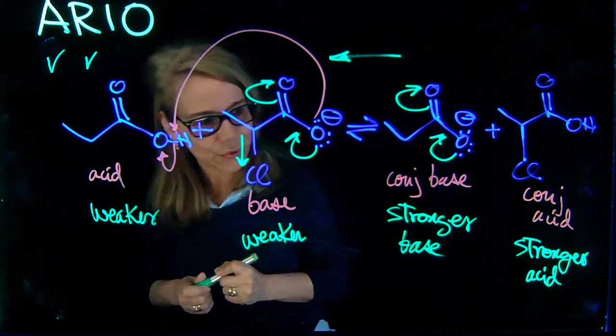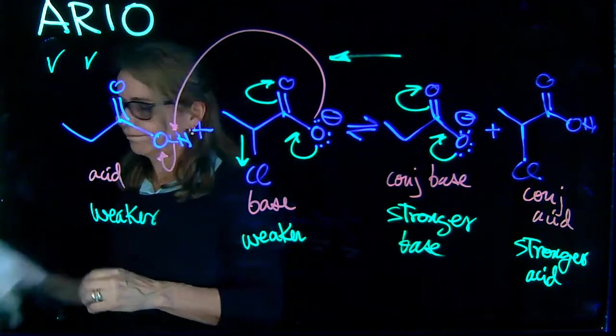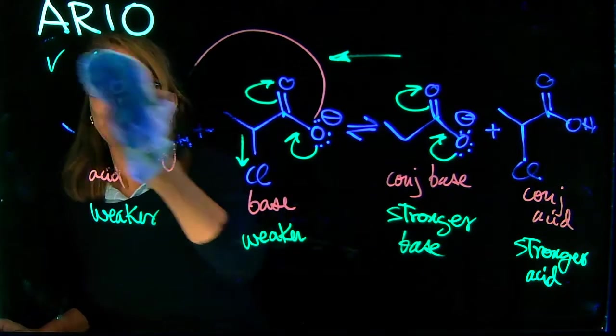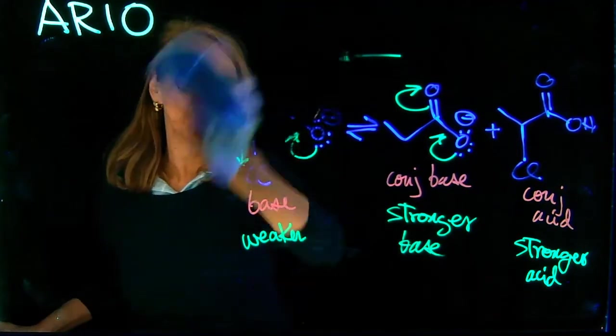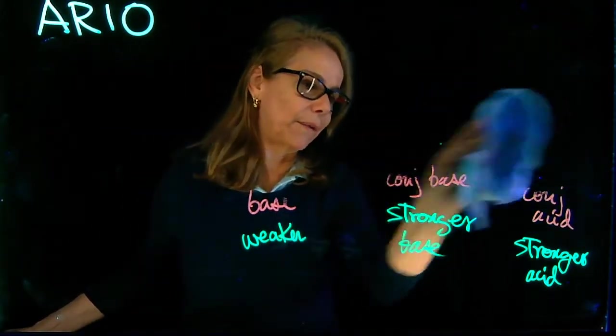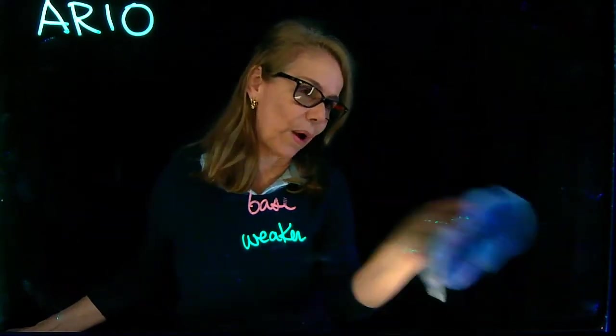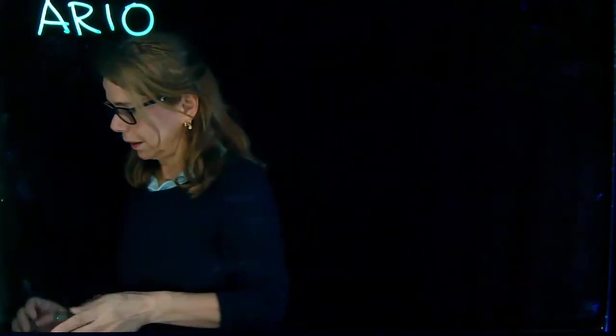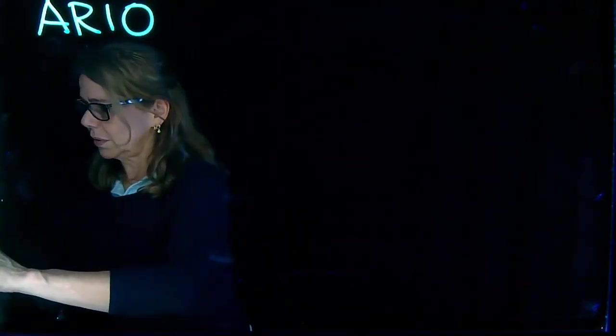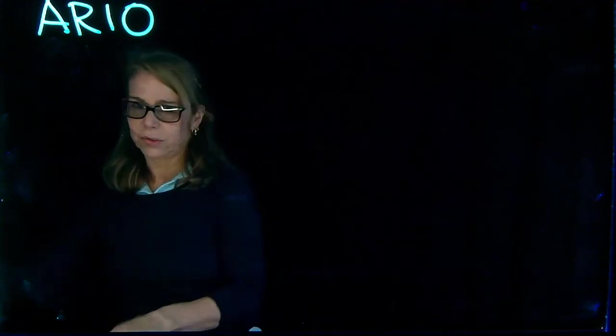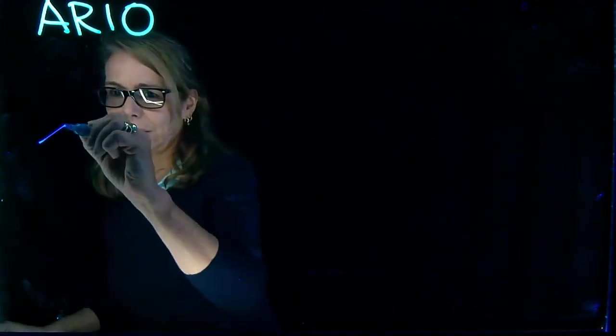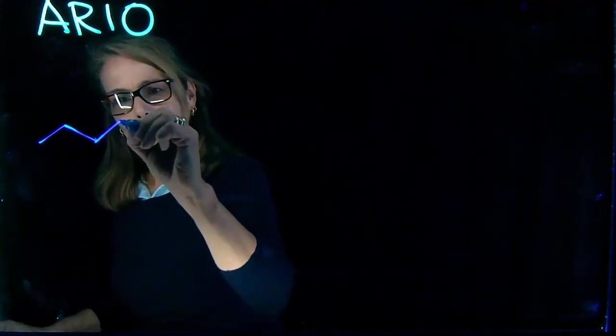Now let's do one more example, using ARIO to analyze where the equilibrium is going. So this time we analyzed two acids where we have the same atom and same resonance effects. And now I'm going to give you another reaction. And the next reaction I have, this.